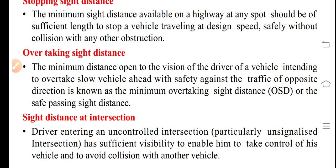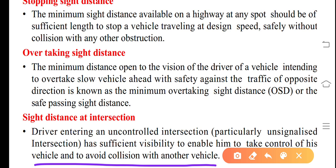Stopping sight distance (SSD): the minimum sight distance available on a highway at any spot should be of sufficient length to stop a vehicle traveling at design speed safely without collision with any other obstruction. Overtaking sight distance (OSD): the minimum sight distance open to the vision of a driver intending to overtake a slow vehicle ahead with safety against oncoming traffic from the opposite direction is known as the minimum overtaking sight distance or safe passing sight distance. At intersections, a driver entering an uncontrolled — particularly unsignalized — intersection must have sufficient visibility to take control of his vehicle and avoid collision.